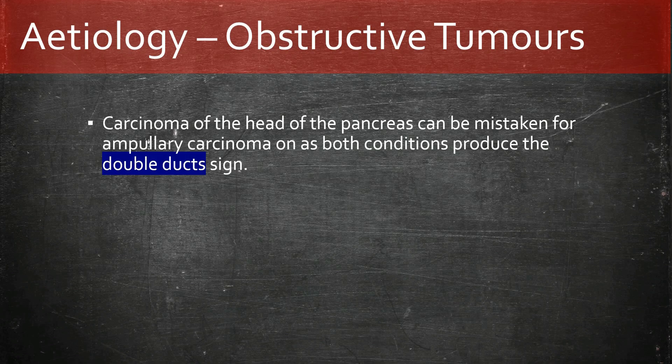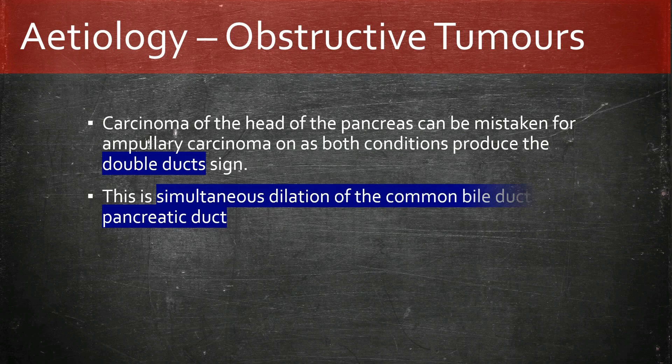The double duct sign is the simultaneous dilatation of the common bile duct and the pancreatic duct. As such, carcinoma of the head of the pancreas can be mistaken for ampullary carcinoma.